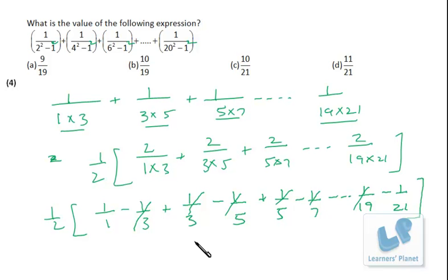So finally we are left with half of 1 minus 1 upon 21, so that is 20 upon 21. So half of 20 upon 21 is 10 upon 21. So I hope you are clear with the method of this particular problem.